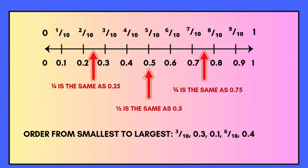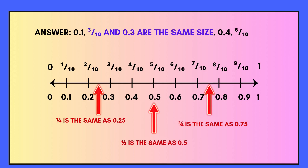The answer is: 0.1, followed by both three tenths and 0.3 because those two are the same size. Next will be 0.4, and finally six tenths.